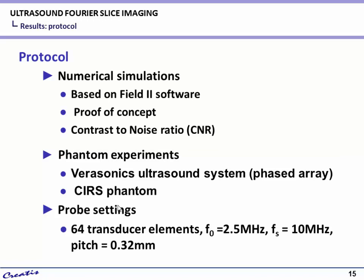Here I will show some results. We did numerical simulations and experiments to validate our method. The numerical simulations are based on Field II software, used to prove the algorithm and measure the contrast-to-noise ratio. The experiments use a Verasonics system with a phased array. Both use the same settings: 64 transducer elements, 2.5 MHz central frequency, 10 MHz sampling frequency, and pitch of 0.32 millimeters.